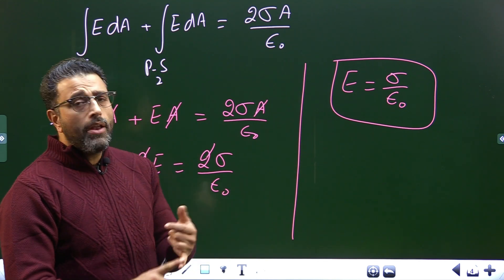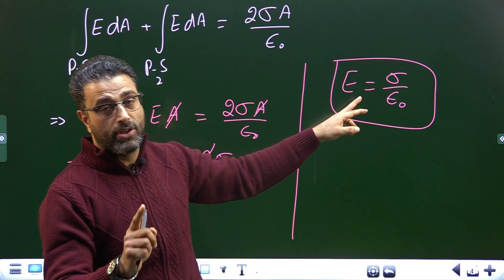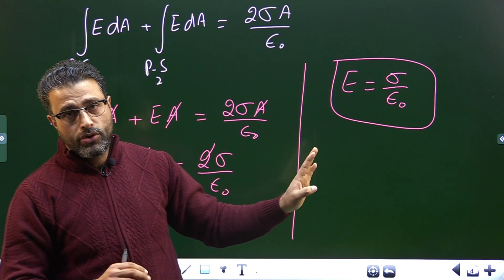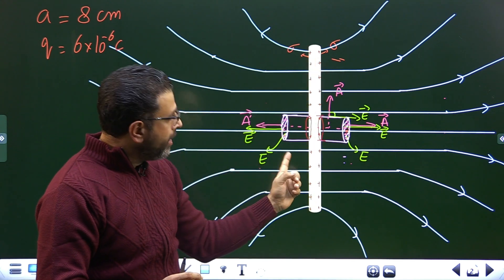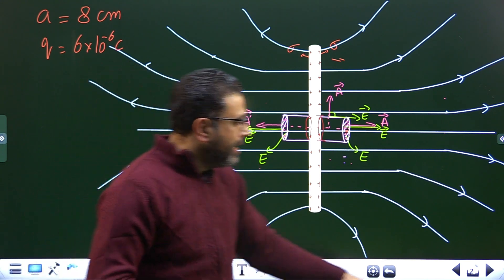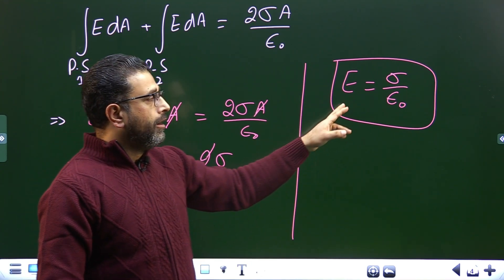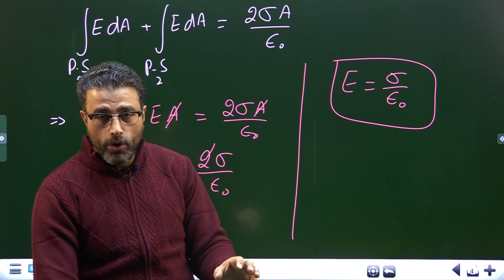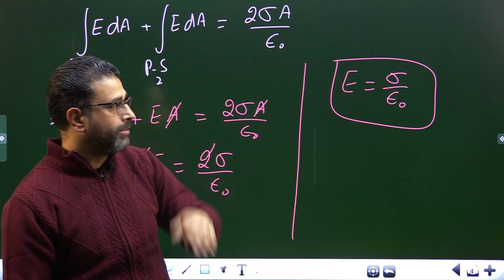Remember this result: field close to a metallic charged surface is always σ/ε₀. The field is always normal to the surface. Writing σ in terms of total charge: σ = Q divided by total area. Since charge is distributed on both faces, total area is 2A′ (where A′ is the area of one face). So E = Q divided by (2A′ · ε₀).